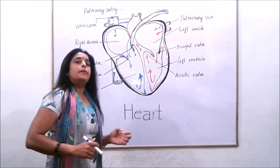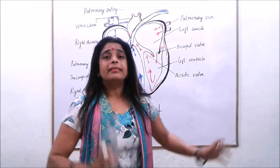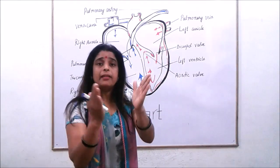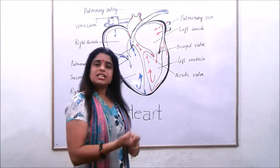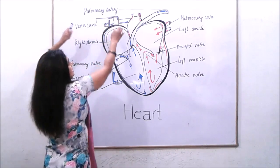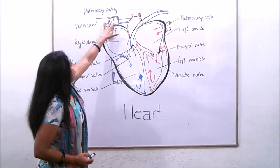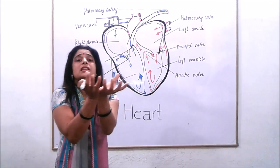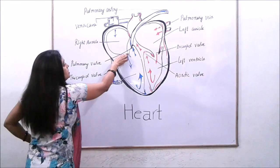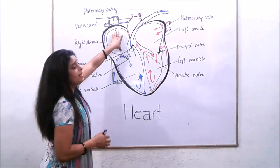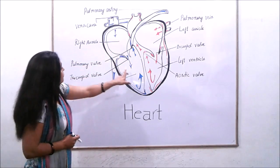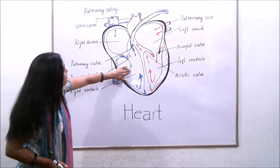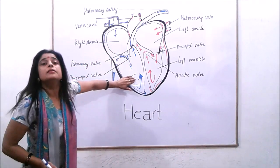Now let's study the mechanism of blood flow — this is really very interesting. Blood from various parts of our body is collected by veins and carried into the largest vein known as the vena cava. The vena cava carries deoxygenated blood to the right auricle. When the right auricle is receiving blood, the tricuspid valve is closed. Once it is filled, the tricuspid valve opens due to high pressure.